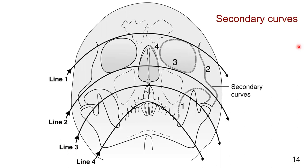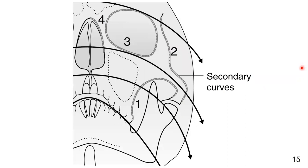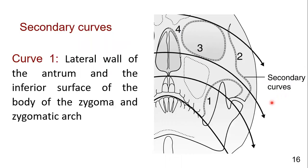Another method to interpret fractures is using the secondary curves. Here you can see curve one, two, three, and four. Curve one passes along the lateral wall of the maxillary sinus, then the inferior surface of the buttress or body of the zygoma, and then the inferior surface of the zygomatic arch.